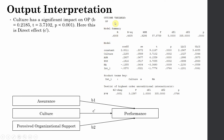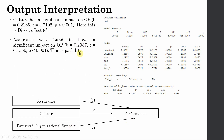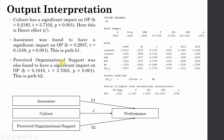The next part of the output shows the outcome variable organizational performance. Performance is affected by all variables in the model: assurance, culture, perceived organizational support, role ambiguity, and the interaction term. Path B1 (assurance to performance) is significant, and path B2 (perceived organizational support to performance) is significant. Both mediators are significant. The direct effect — culture on organizational performance in the presence of the two mediators — is also significant.